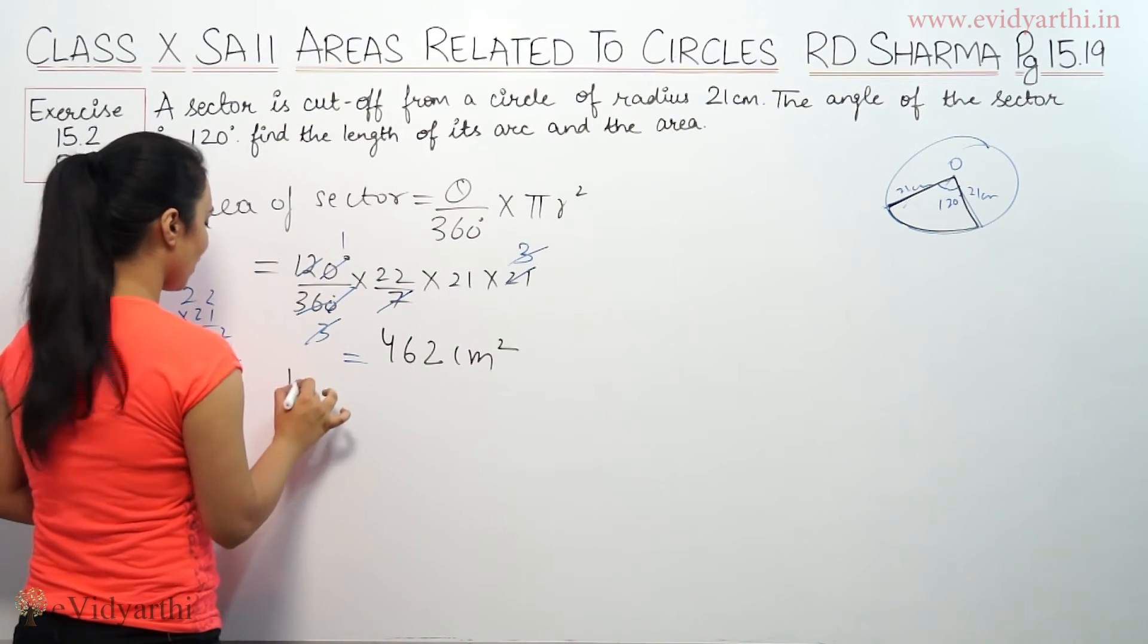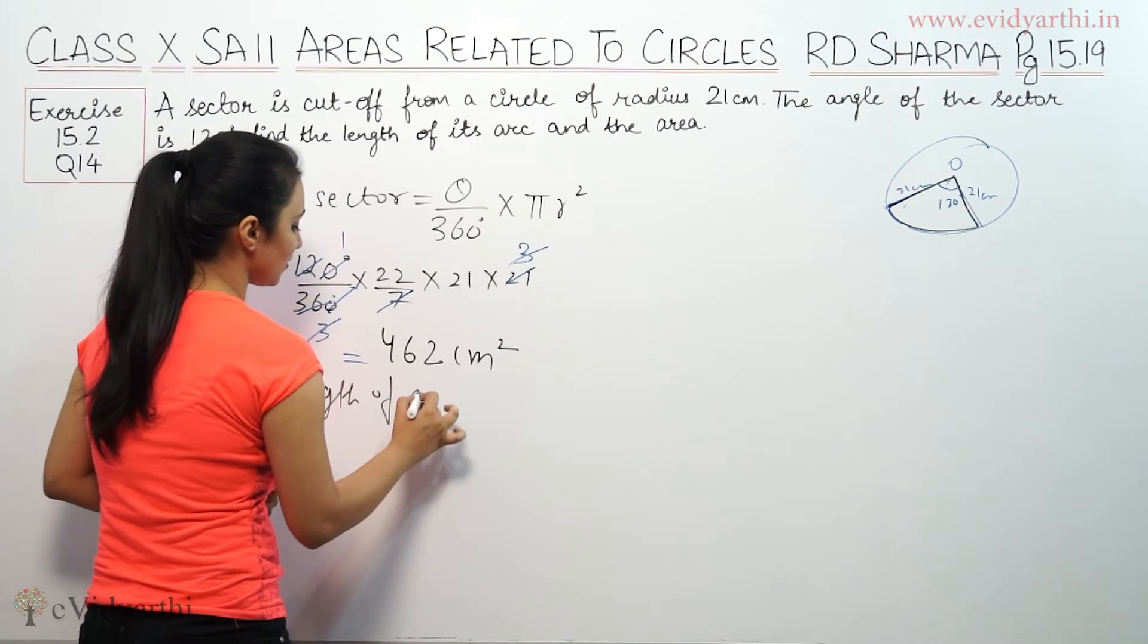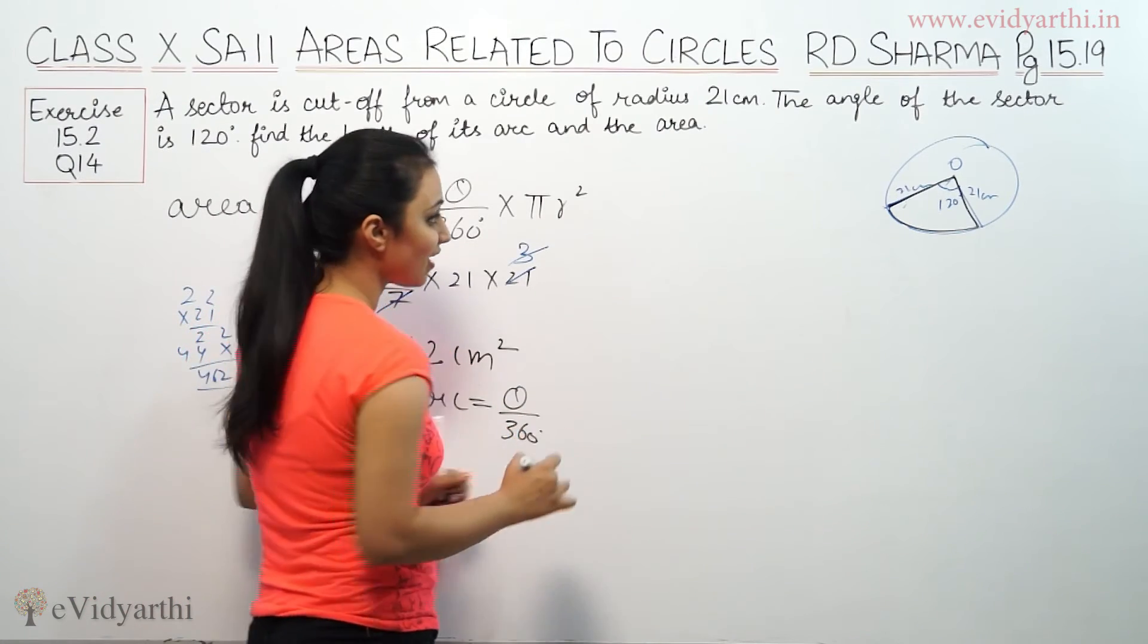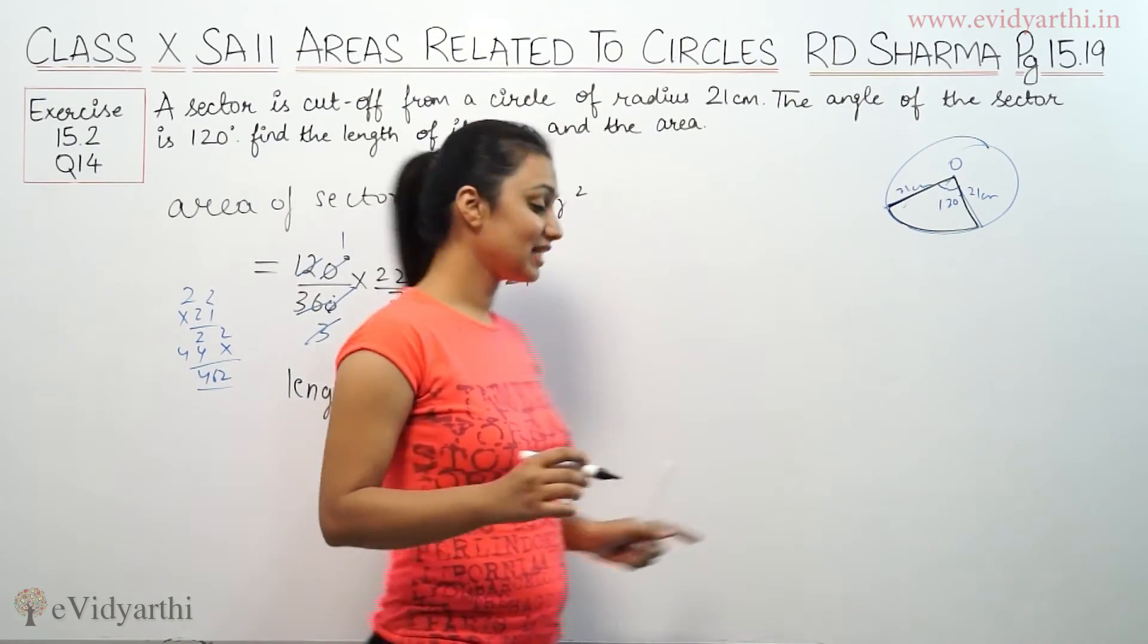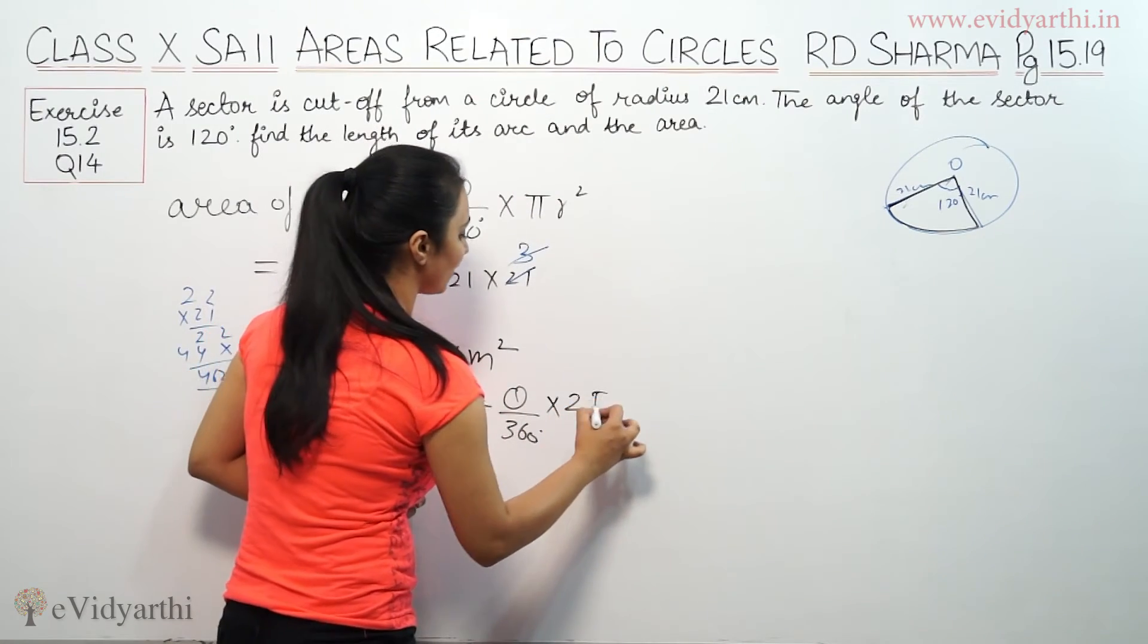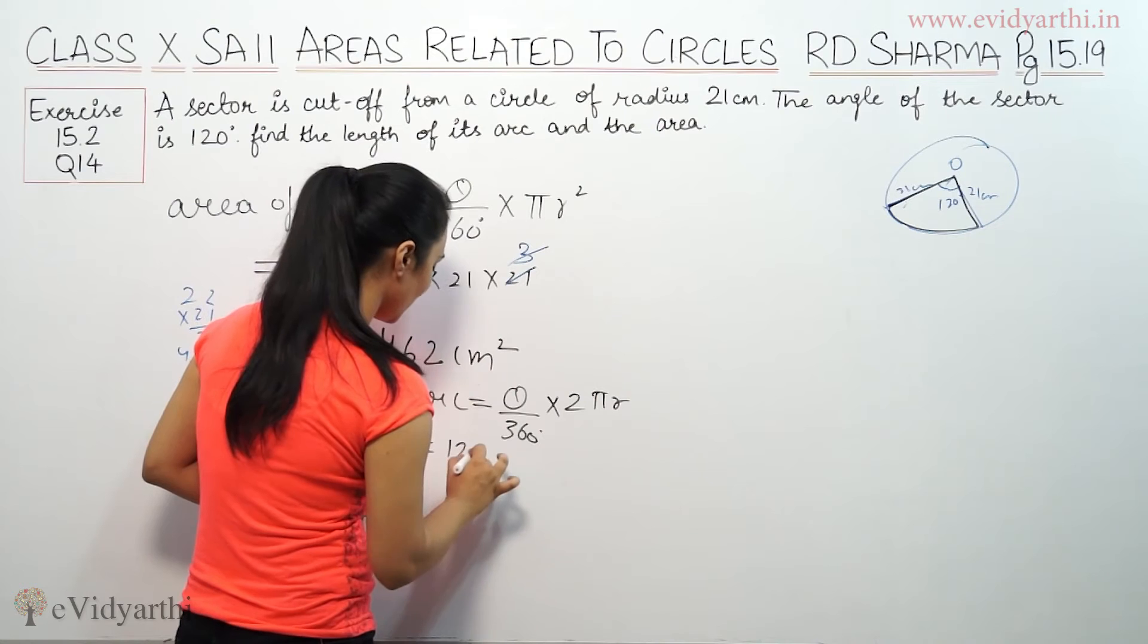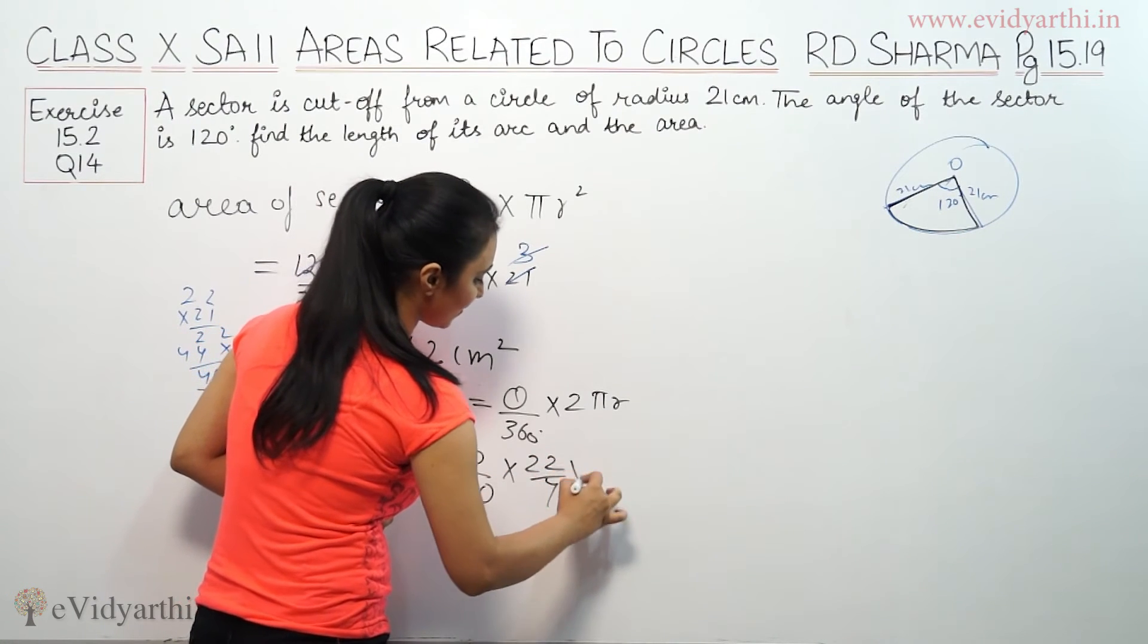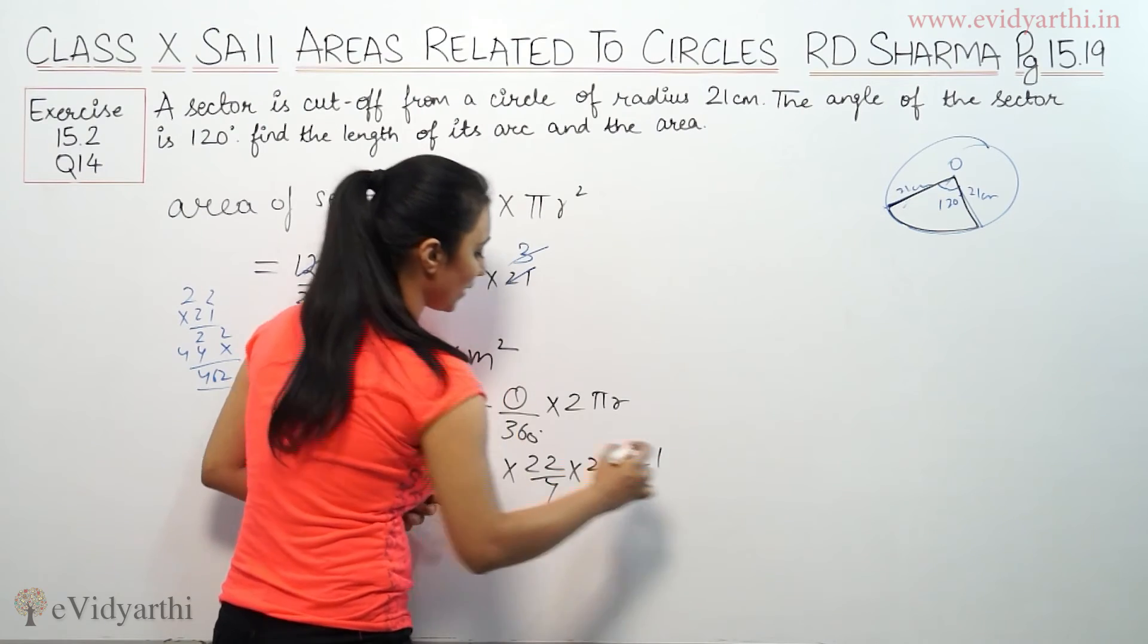Then length of arc. So length of arc will be theta by 360 into circumference. So theta by 360 into 2 pi R. Means 120 by 360 into 22 by 7, the radius is 2 into 21.